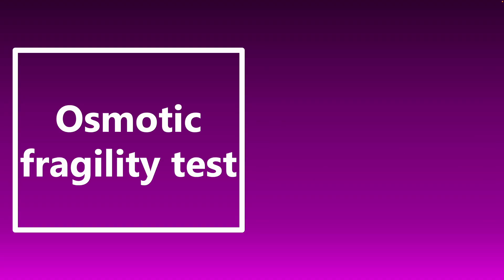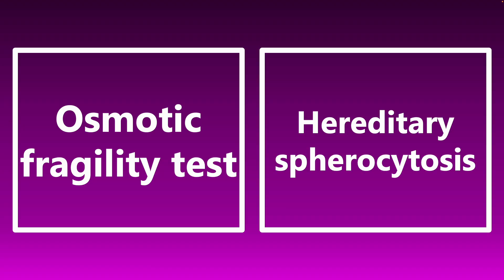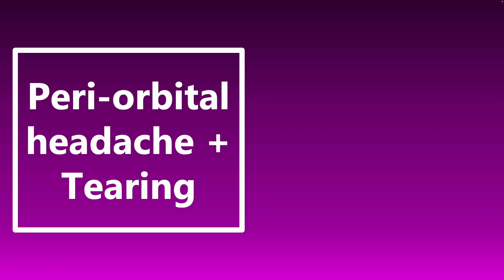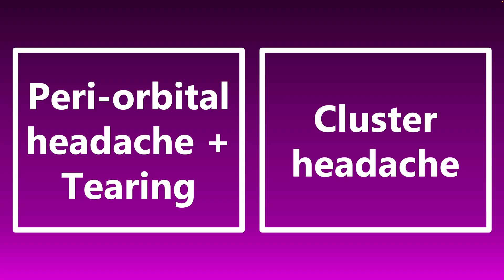Osmotic fragility test — this is used to diagnose hereditary spherocytosis, and can also be used in the diagnosis of thalassemia. Periorbital headache plus tearing — if you see those two symptoms combined, think cluster headache. And going back to what we covered earlier, one of the first-line prophylactic medications for cluster headache is verapamil.